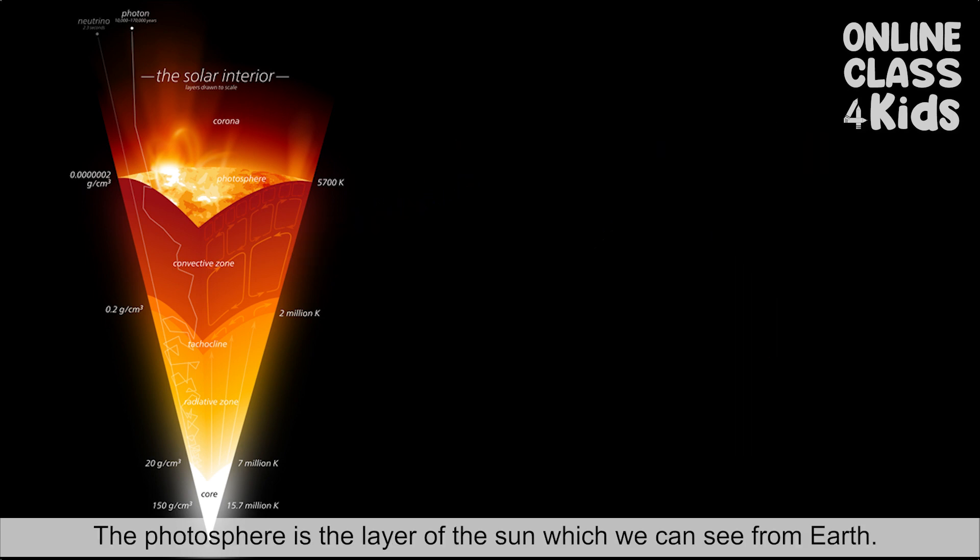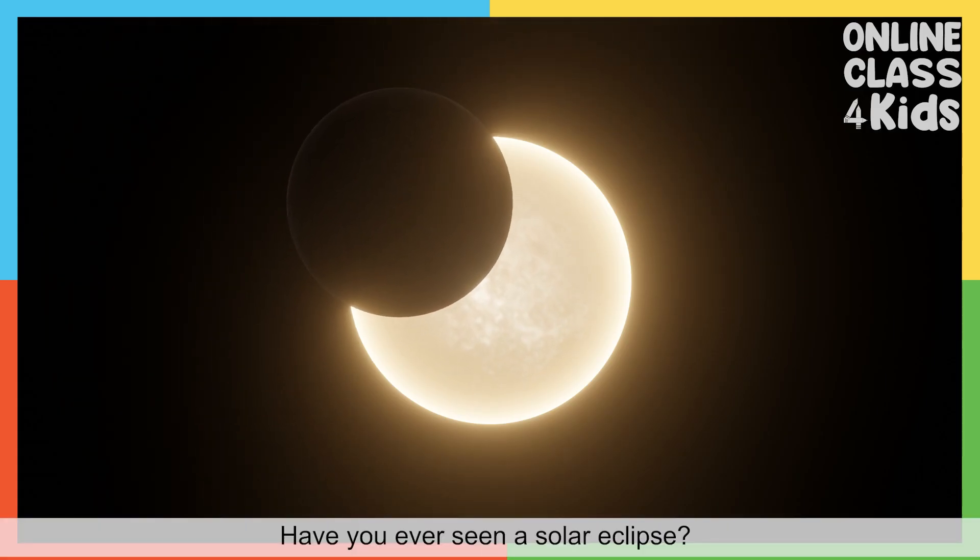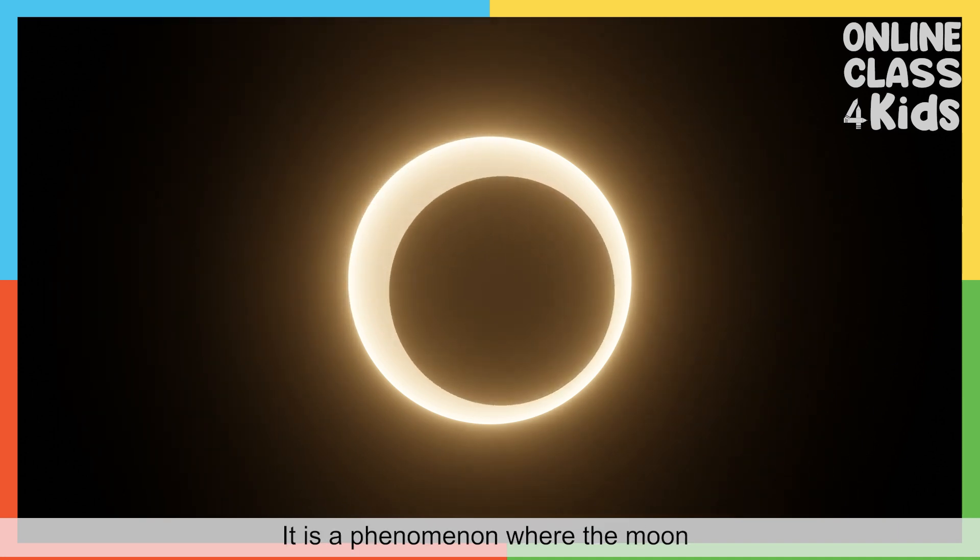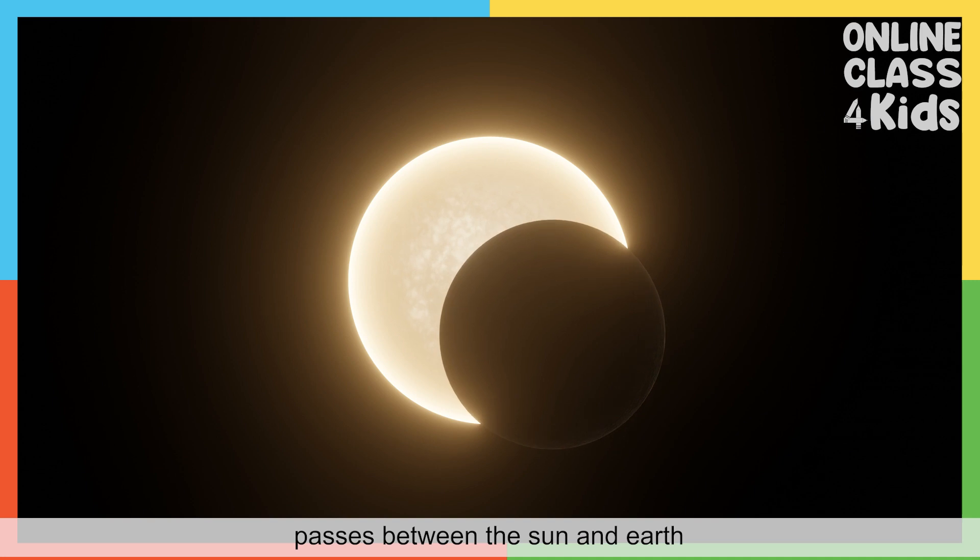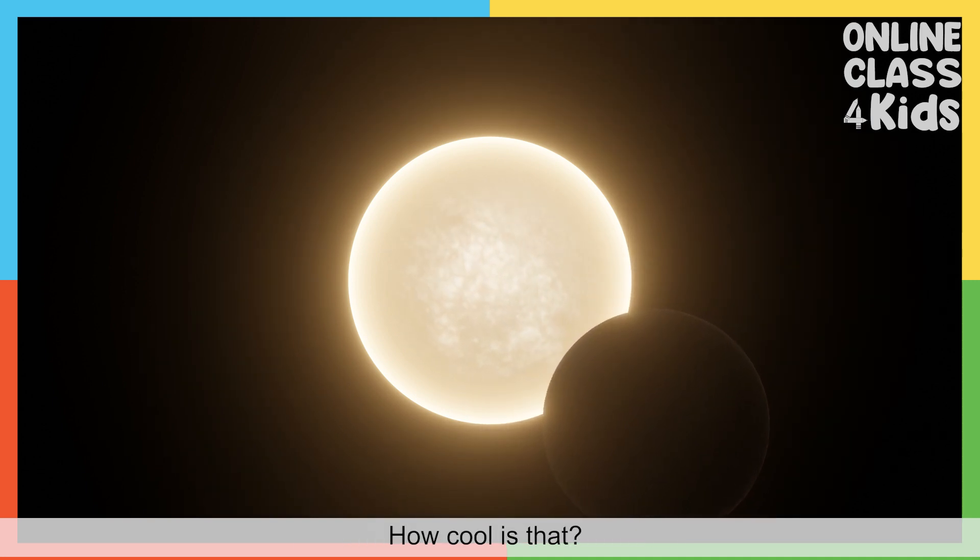The photosphere is the layer of the Sun which we can see from Earth. Have you ever seen a solar eclipse? It is a phenomenon where the Moon passes between the Sun and Earth. How cool is that?